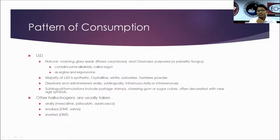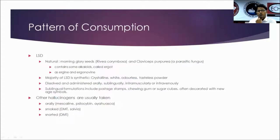Coming to different patterns of consumption — LSD is available in natural and synthetic derivatives. The natural derivative comes from morning glory seeds and from the fungus Claviceps purpurea. Synthetic derivatives are crystalline, white, odorless, tasteless powder that can be dissolved and administered sublingually, intramuscularly, or intravenously. Sublingual forms are available as postage stamps, chewing gums, and sugar cubes. Other hallucinogens like mescaline, psilocybin, and ayahuasca are taken orally; dimethyltryptamine and salvia are smoked; dimethyltryptamine can also be snorted.